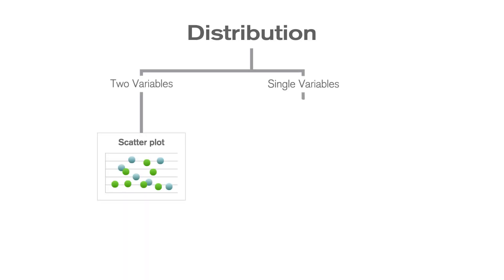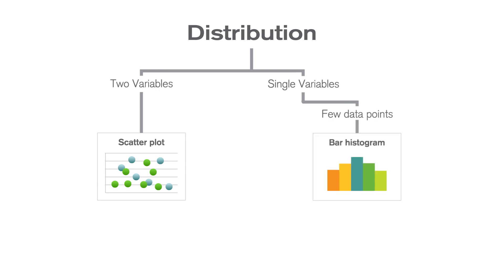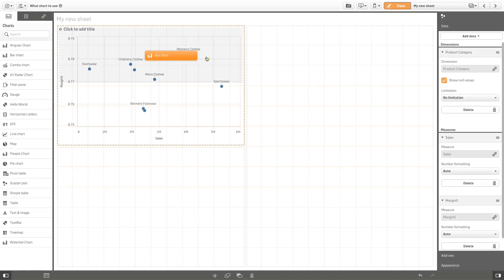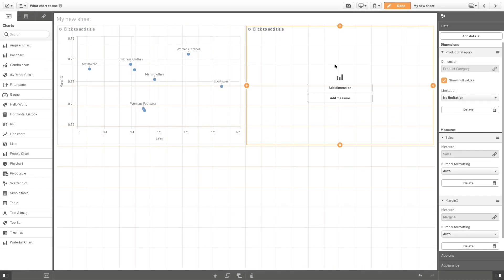If you have one variable and a few data points, you can select a bar histogram chart. This allows you to visualize the sales distribution by price group.